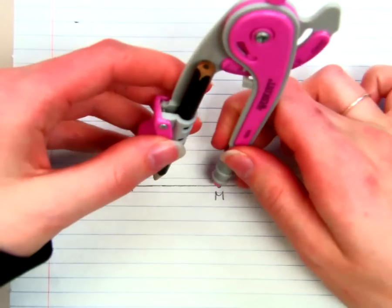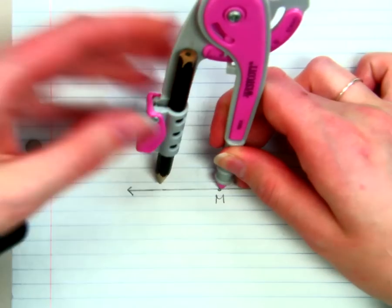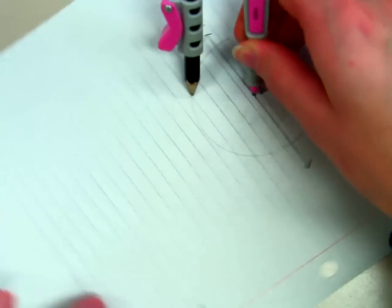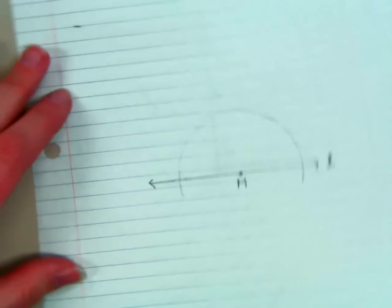So I'm going to take my compass and, with M being my center, swing an arc that goes through L twice. So I kind of had to twist my paper.